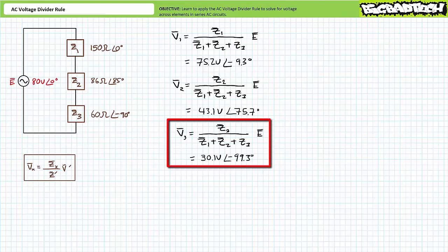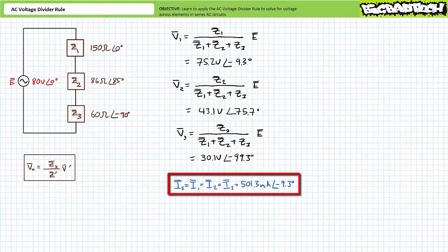Finally, solving for V3: V3 equals Z3 divided by (Z1 plus Z2 plus Z3) times E, yielding 30.1 volts at an angle of negative 99.3 degrees. As a check, an Ohm's law calculation for any of these voltage values yields 501.3 milliamps at an angle of negative 9.3 degrees, confirming the most fundamental property of series AC circuits — current through elements in series is the same.